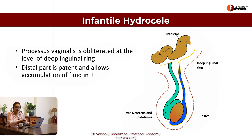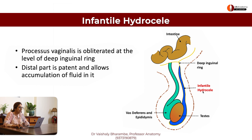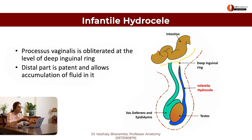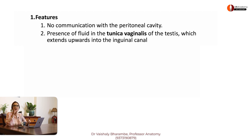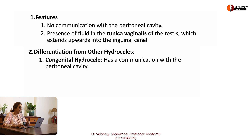Infantile hydrocele — what is this? Take a look; the images speak for themselves. This is infantile hydrocele. See how it is obliterated at the level of the deep inguinal ring, but the rest of the processus vaginalis is patent, allowing for fluid collection. Features: no communication with the peritoneal cavity, but the hydrocele sac will extend upwards almost to the inguinal canal, or even through it, till the deep inguinal ring.